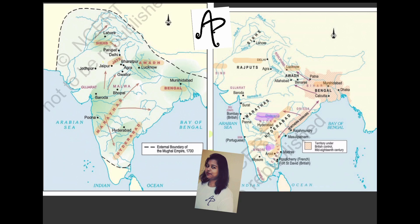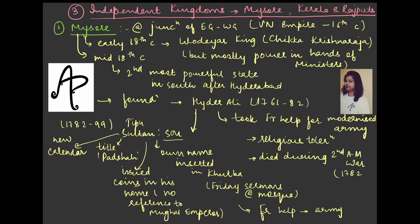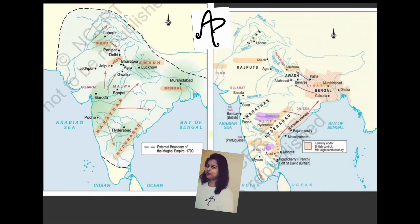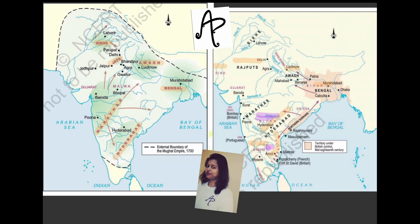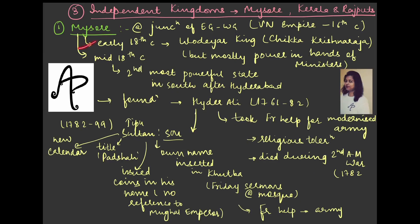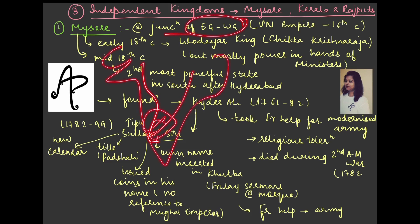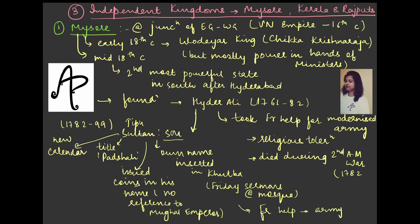Moving on to the next set — the independent kingdoms. If you look at the map, you can see Mysore, here the Rajputs, and here Kerala. Now when we talk about the independent kingdoms, the first is Mysore. We have seen its location — it is situated at the junction of the Eastern Ghats and the Western Ghats. Mysore was also part of the Vijayanagar Empire in the 16th century, which you will study in detail in medieval history.